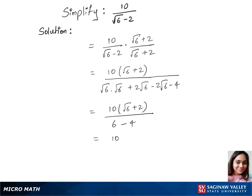Now we have 10 times root 6 plus 2 over 6 minus 4 is 2 and 2 cancels 10 with 5. We are left with 5 times root 6 plus 2.